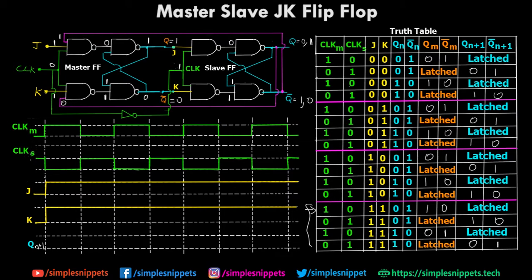For case one: clock of master is 1 and clock of slave is 0. From the chart, clock of master is 1, clock of slave is 0, J and K are both 1 throughout all four cases. The previous value of q was 0, so we start from this point. For this entire duration when clock of master is 1 and clock of slave is 0, the slave is in latch state and q(n+1) stays at 0.